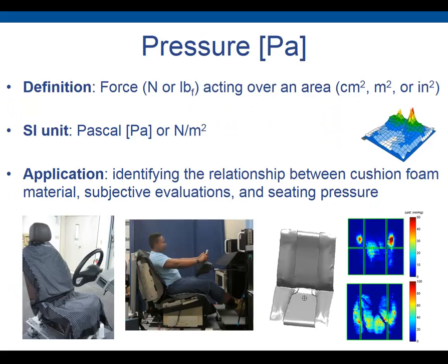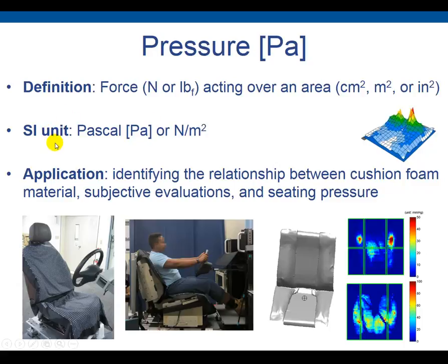Let's look at pressure first. The definition of pressure is force acting over an area. The force is measured in Newtons or pound-force. The area can be in many different units such as centimeter square, meter square, or inch square — they are always square, since area is length times width. The SI unit for pressure is Pascal, which is Newtons per meter square.